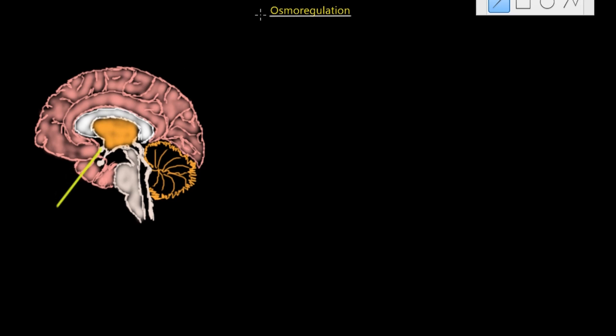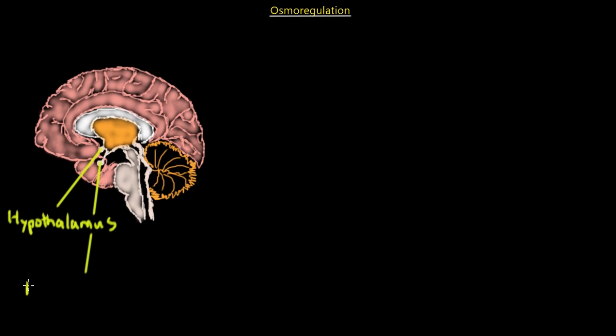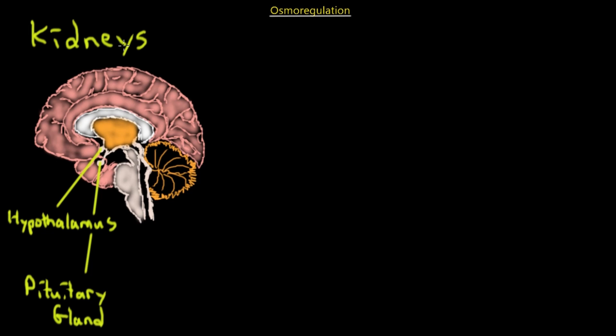Osmoregulation is the proper term for the control of water within our body. There are going to be three primary body parts involved. The most important for homeostasis is the hypothalamus, and just beneath that the hypothalamus will have a pituitary gland. The hypothalamus is basically the mastermind, and the pituitary gland releases hormones that stimulate osmoregulation. The stimulation occurs in the kidneys, which primarily control how much water is going to be excreted.